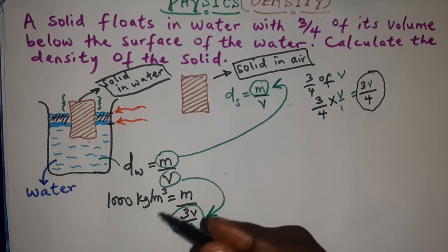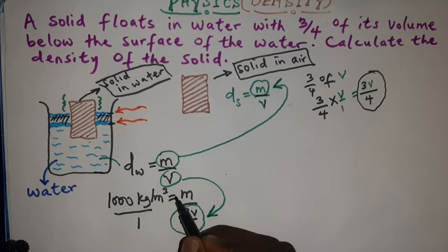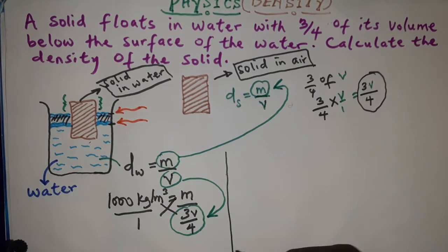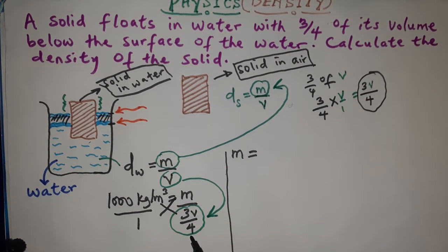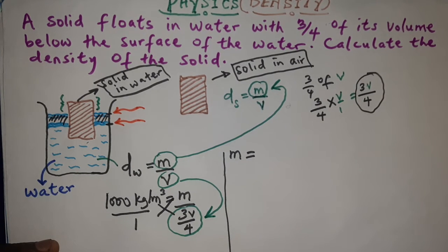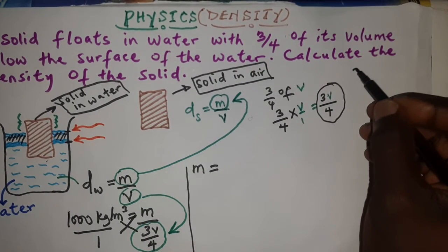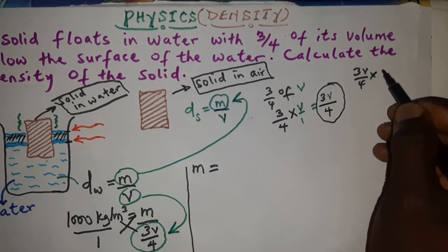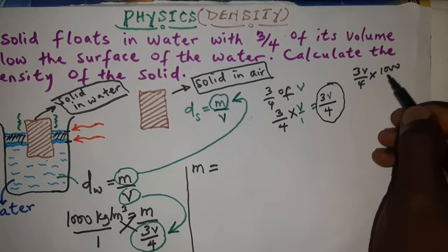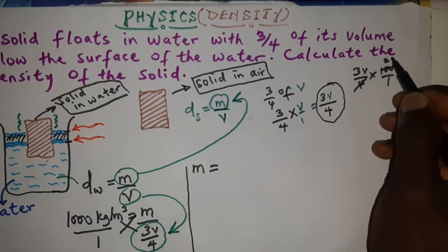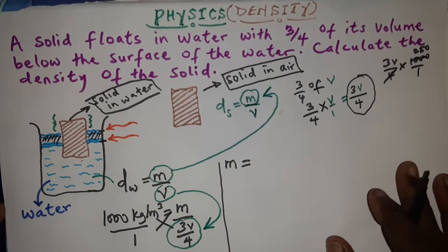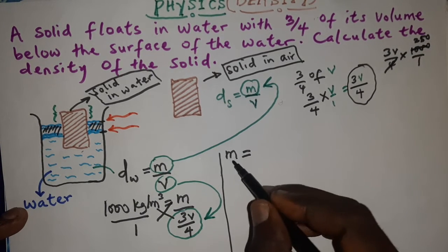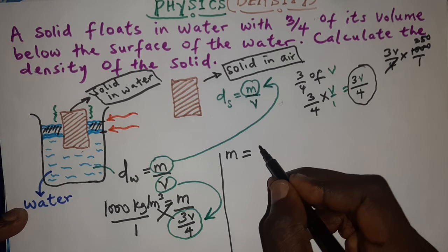Cross-multiplying: m × 1 = m, and 1000 × (3V/4) gives us 750V. Let me verify: 1000 ÷ 4 = 250, and 250 × 3 = 750. So after cross-multiplying, we get m = 750V.